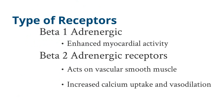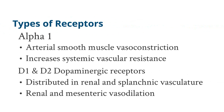Beta 1 adrenergic receptors enhance myocardial activity, increasing the cardiac output. Beta 2 adrenergic receptors are located on vascular smooth muscle and lead to increased calcium uptake. When there's increased calcium within the muscle, this causes vasodilation of the vasculature. Alpha 1 receptors are located on arterial smooth muscle and when activated cause vasoconstriction, resulting in an increase in systemic vascular resistance.